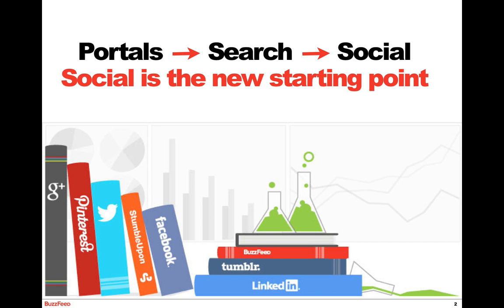Social is quickly becoming the new starting point. Years ago, users discovered content through portals — AOL, Yahoo, MSN — these are all places where people discovered content daily. Then, as search algorithms improved, sites got better at making sure their content appeared in search, and users were confident they could find what they were looking for. Discovery shifted to search.